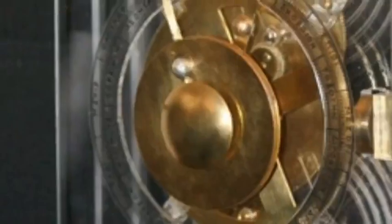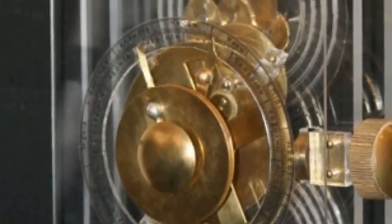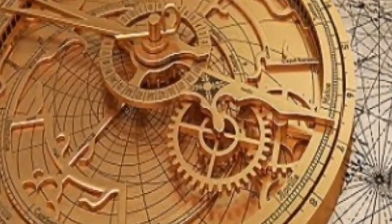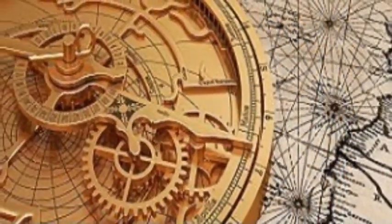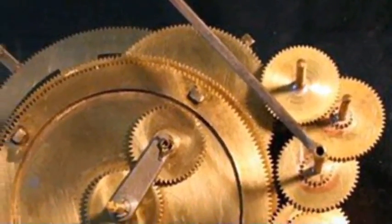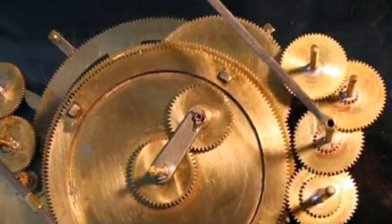The mechanism includes hands or pointers for Mercury, Venus, Mars, Jupiter, and Saturn, all of which are easily visible in the sky, as well as a rotating ball that showed the phases of the moon.